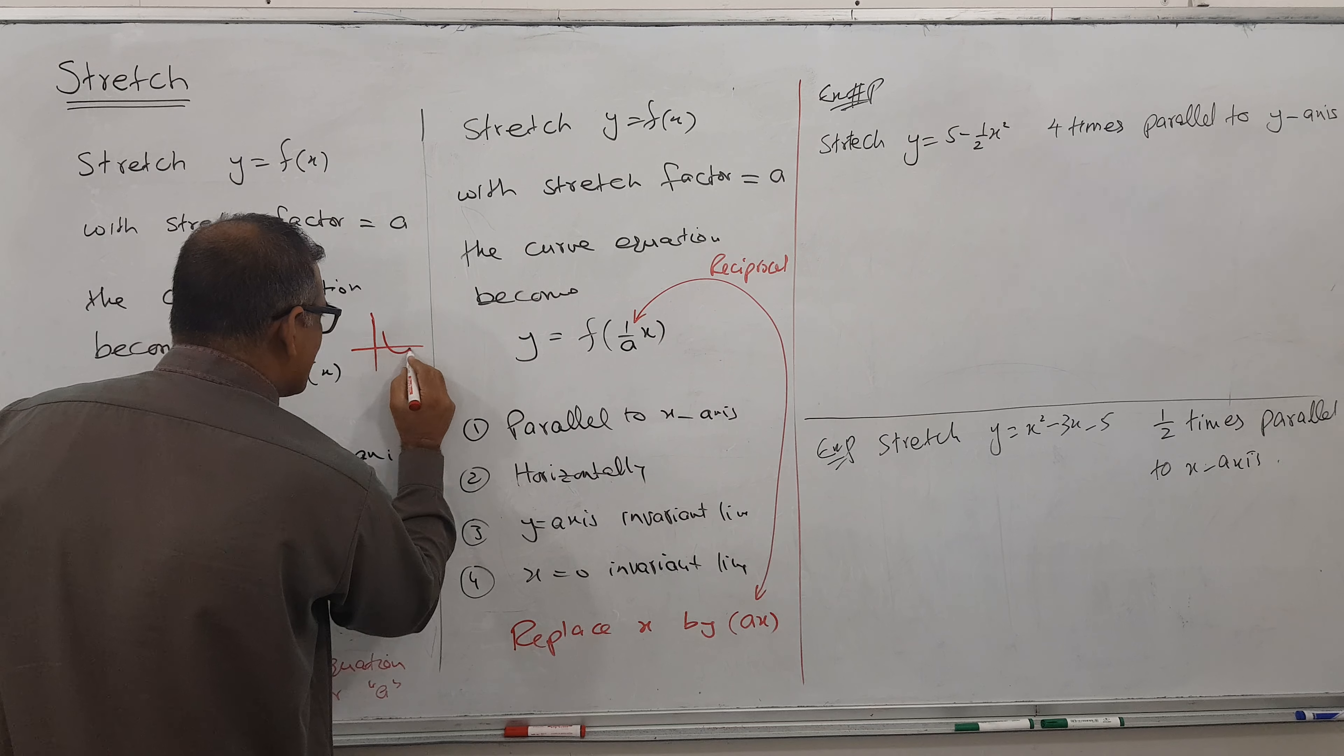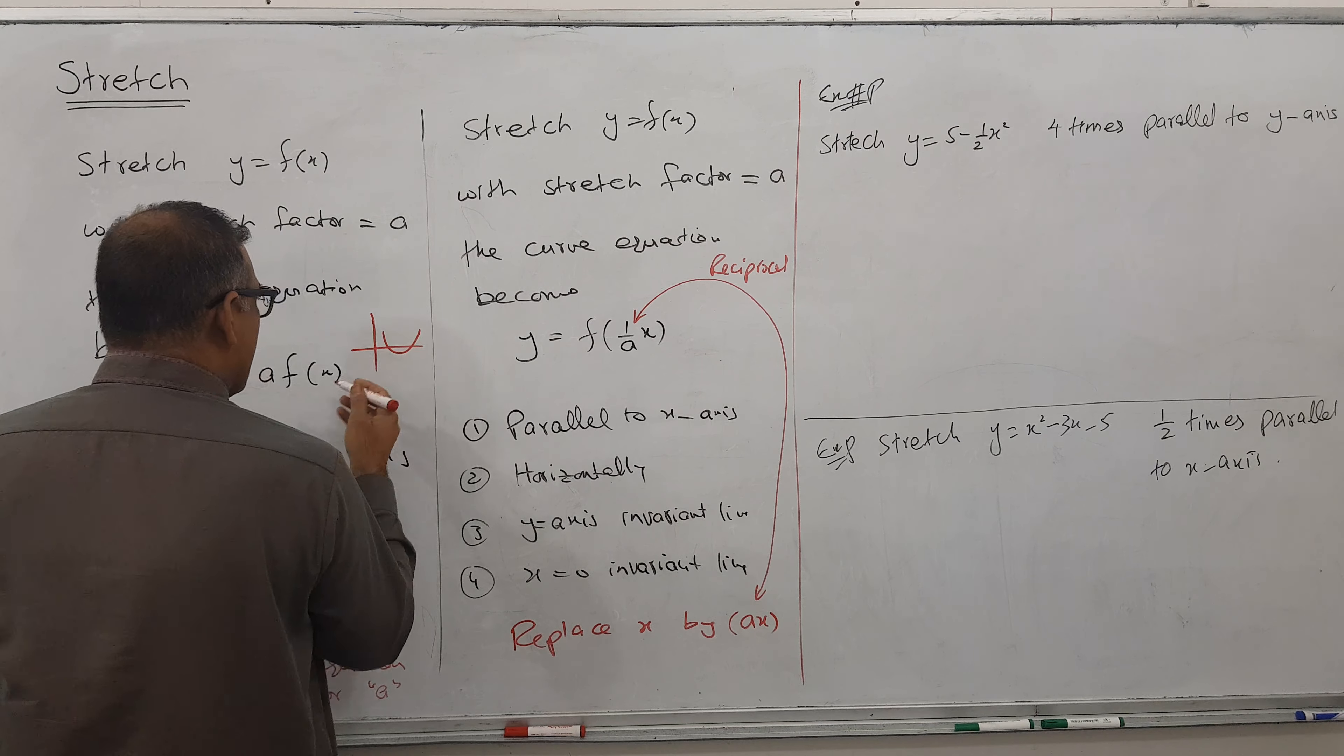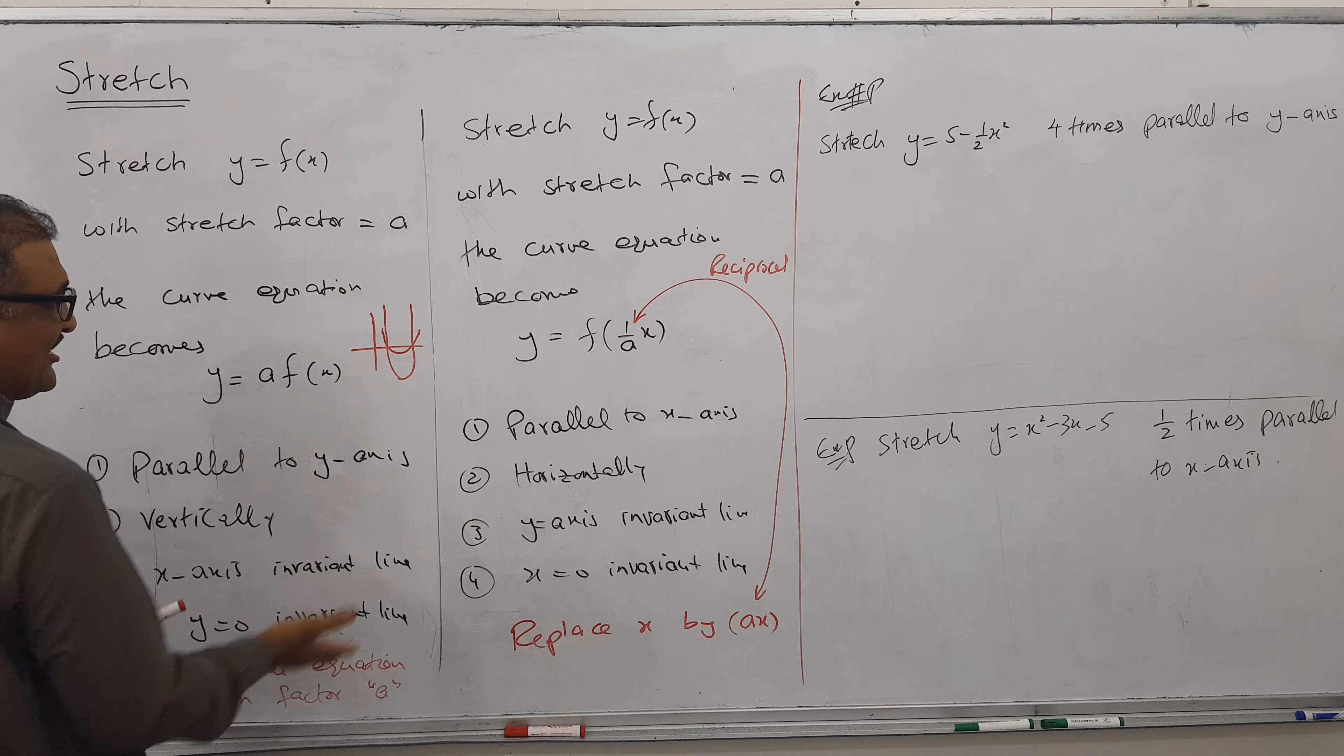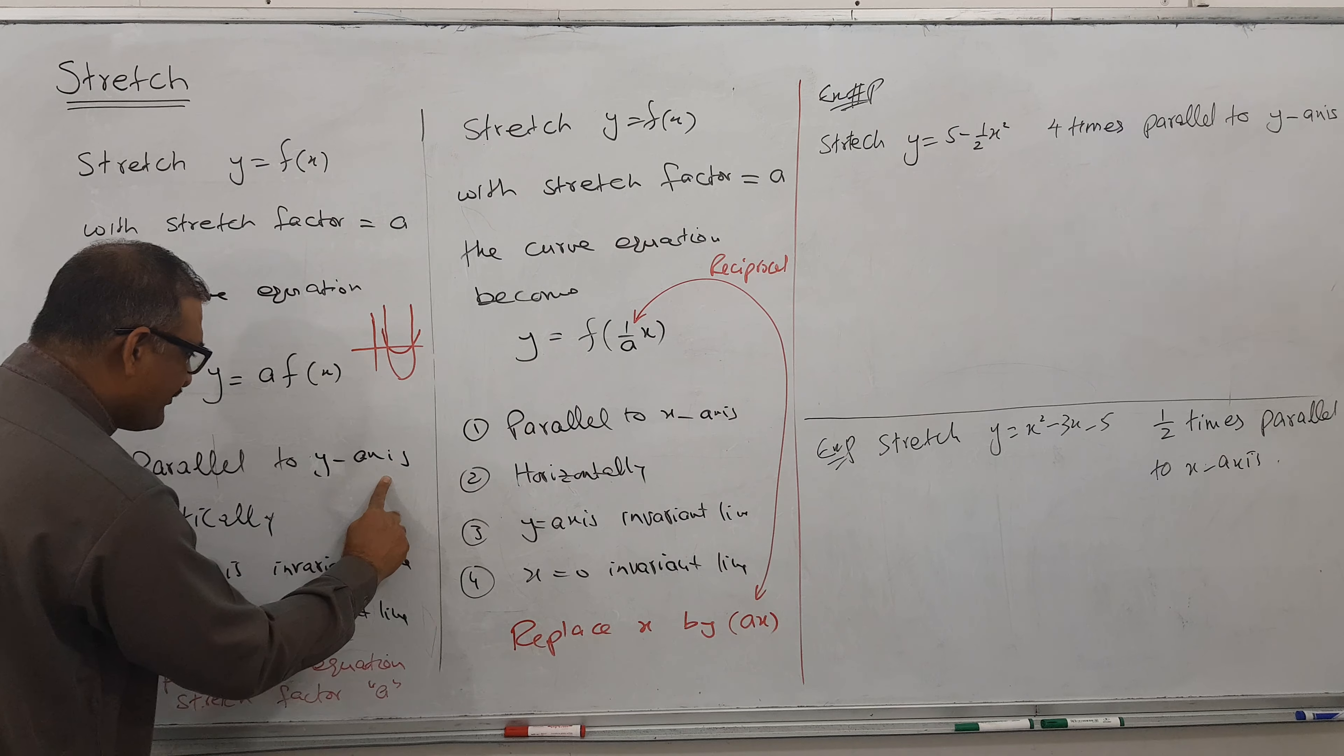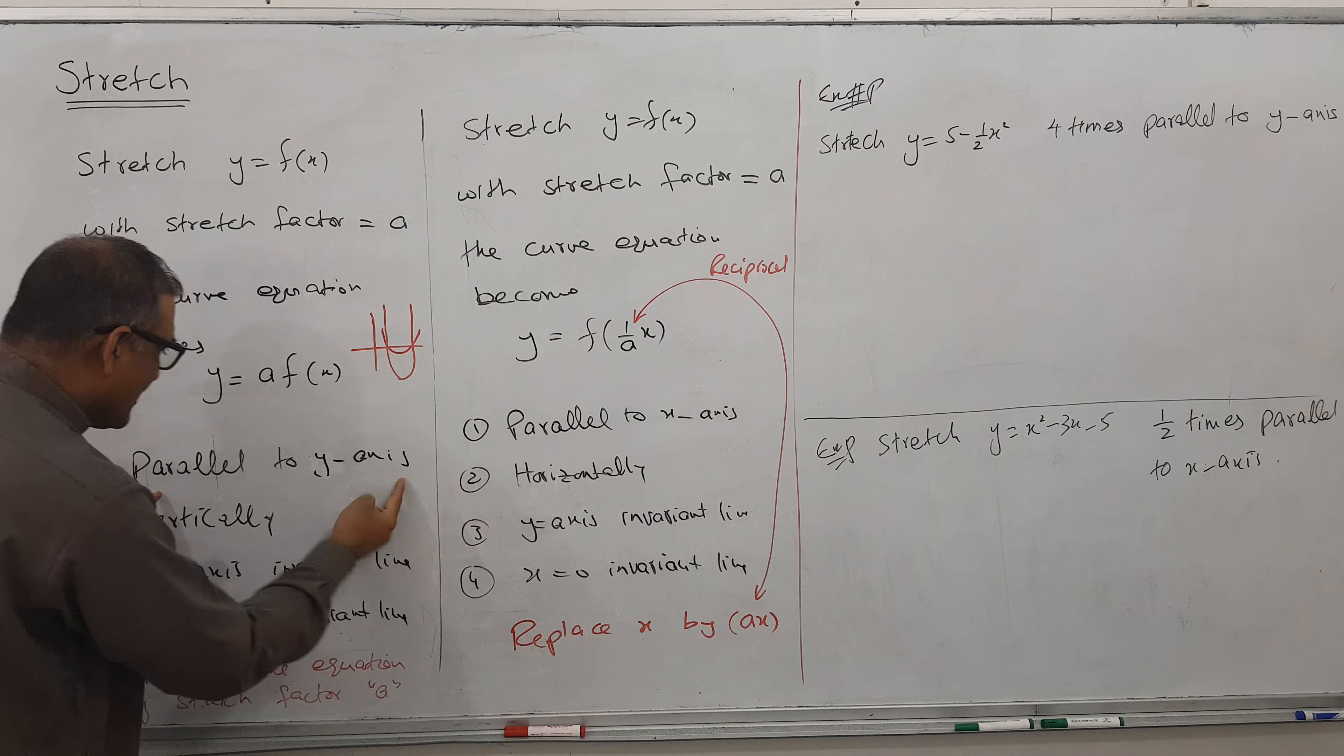For example, this is actually the graph and it becomes this way. This is called parallel to y-axis. So he can use this language. He can use the word vertically. It's also called vertically.